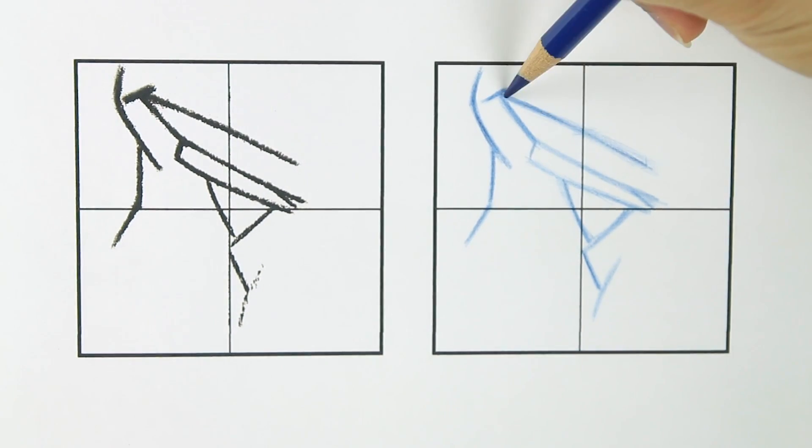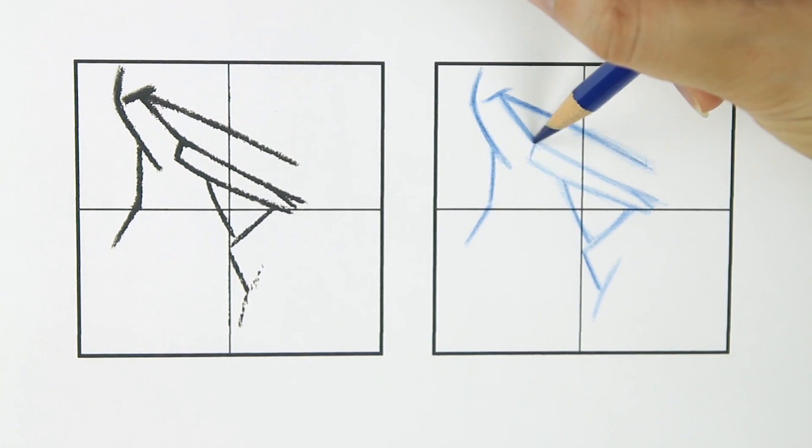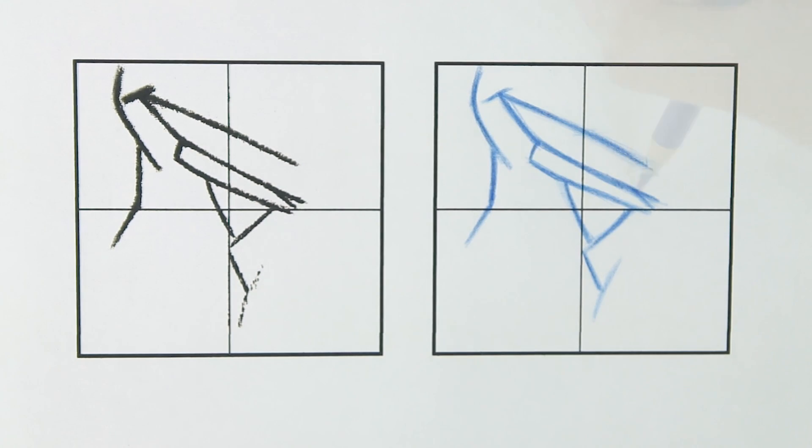As you can see, simply by matching the angles and distances of a few lines, we were able to create the illusion of an eye. Now go ahead and pause the video and draw this yourself, if you haven't done so already. Remember to carefully observe angles, distances and negative spaces.